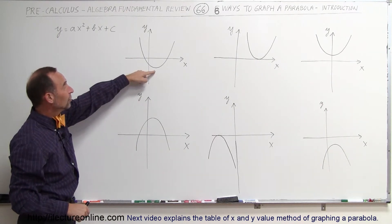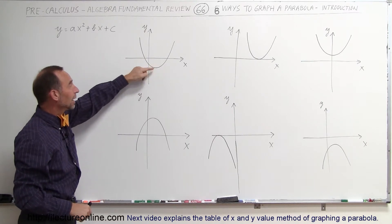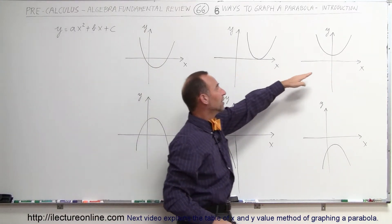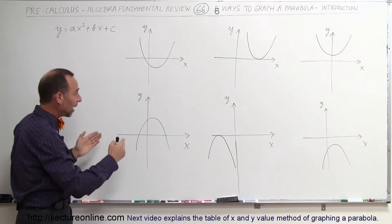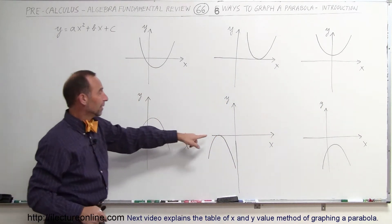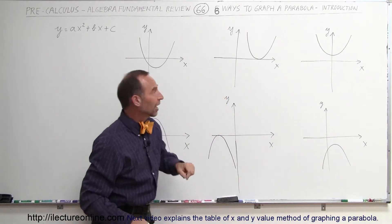In this case, you can see that the vertex is below the x-axis. Here you can see that it's on the x-axis. And there you can see it's above the x-axis. And the same can happen when it opens downward. It can be above, just touching the x-axis, or be below the x-axis.